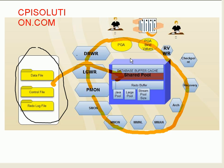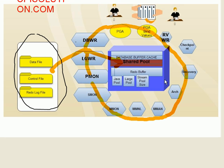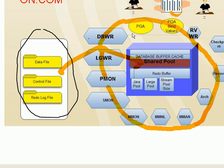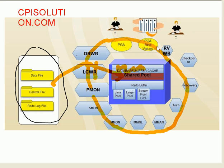Let's understand the Oracle database architecture in more detail. These are the various processes in an Oracle database, and this part is the memory structure. The memory structure comprises the database buffer cache.